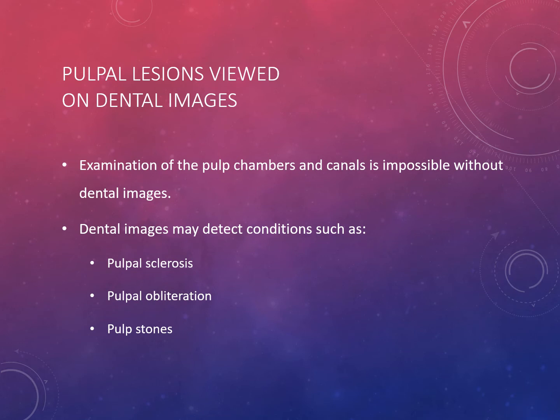Moving into pulpal lesions, starting on page 429, the pulp chamber contains several conditions that can't be seen without radiographs. Radiographs are absolutely essential for detecting these conditions. Many dental procedures require information about the size and location of the pulp cavity before treatment begins. The conditions covered are pulpal sclerosis, pulpal obliteration, and pulp stones.